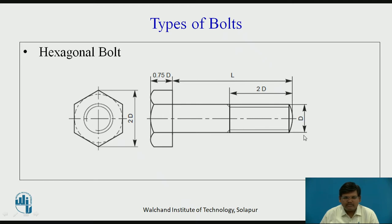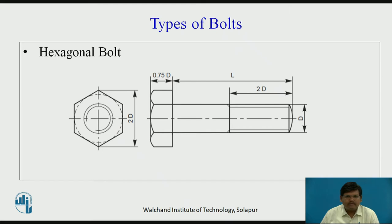The diameter of the shank is D. The head height is 0.75D. The convention for external threads is shown in the front view, and the total hexagonal size is 2D. This is how a typical hexagonal bolt looks. It has wide applications in automobiles and many household equipment.